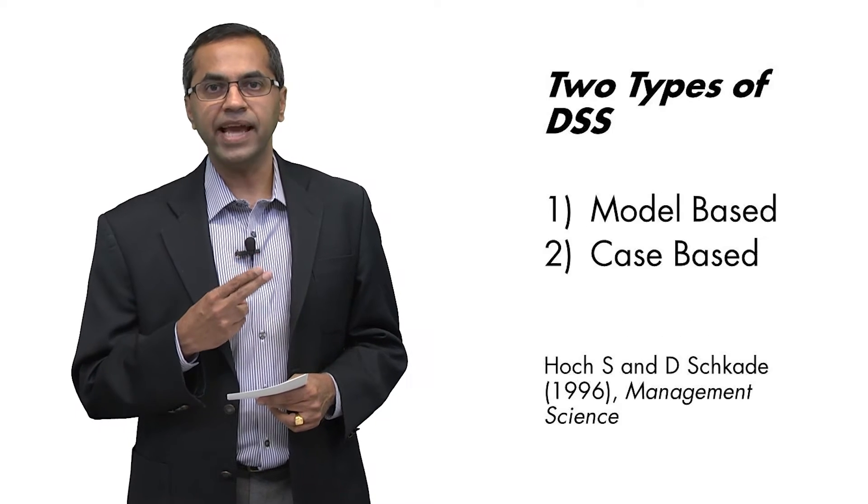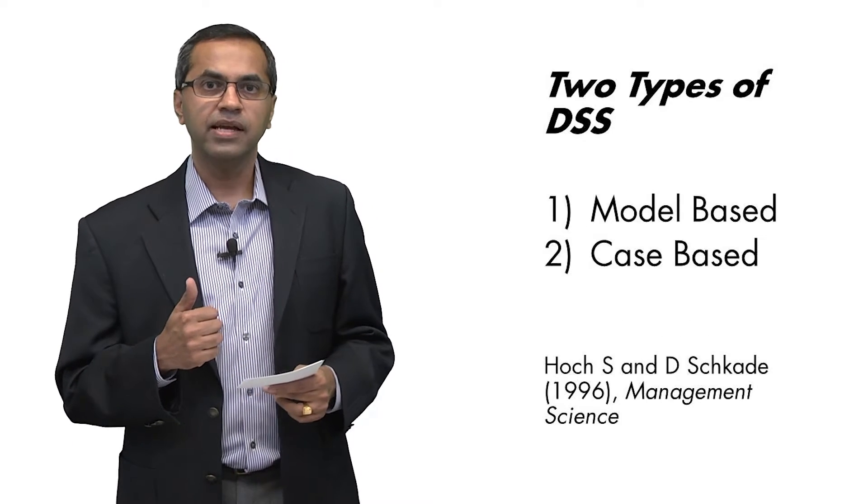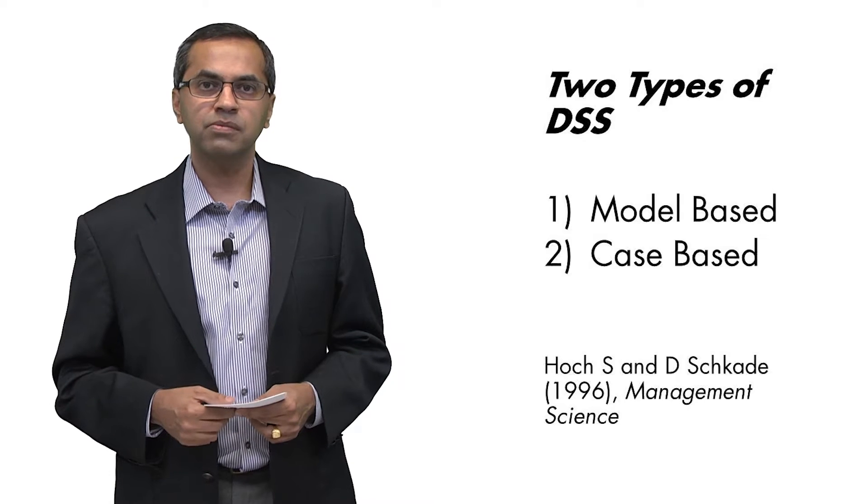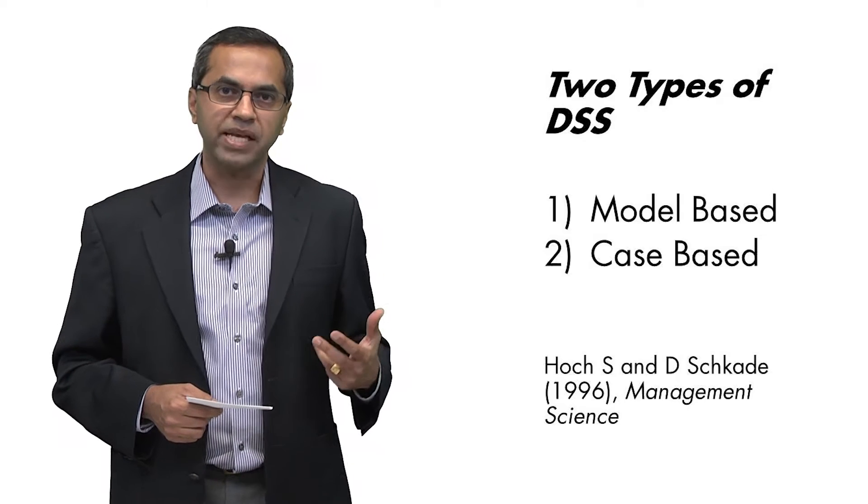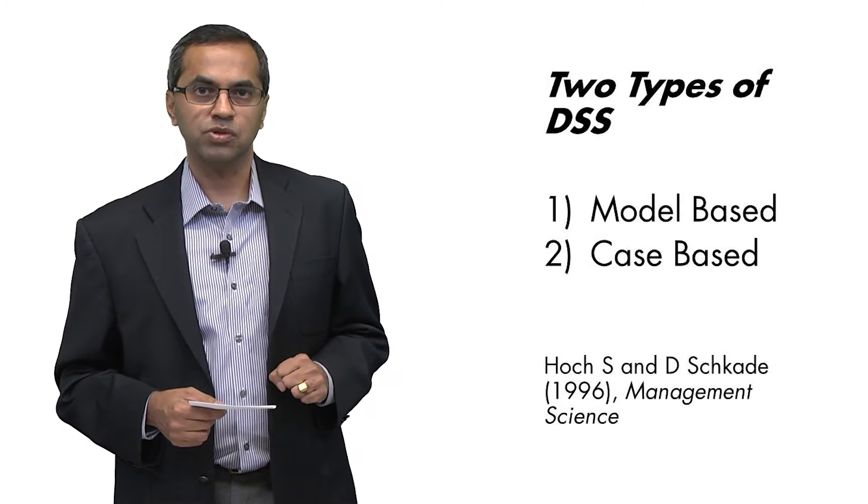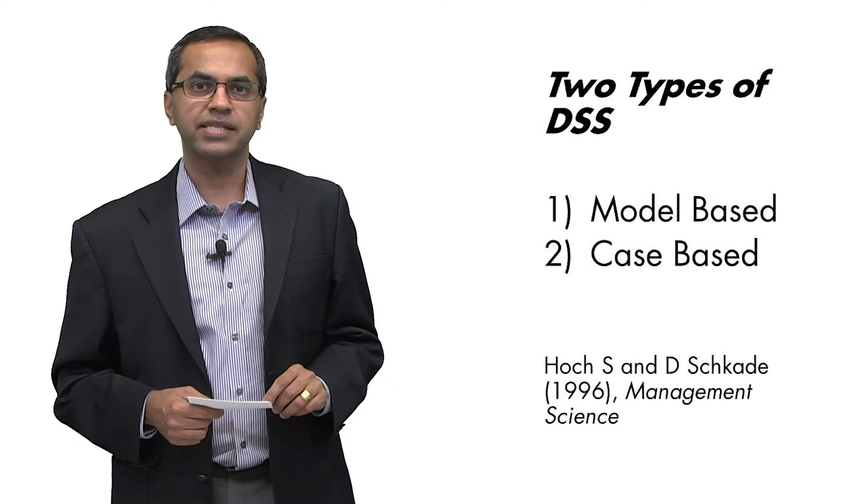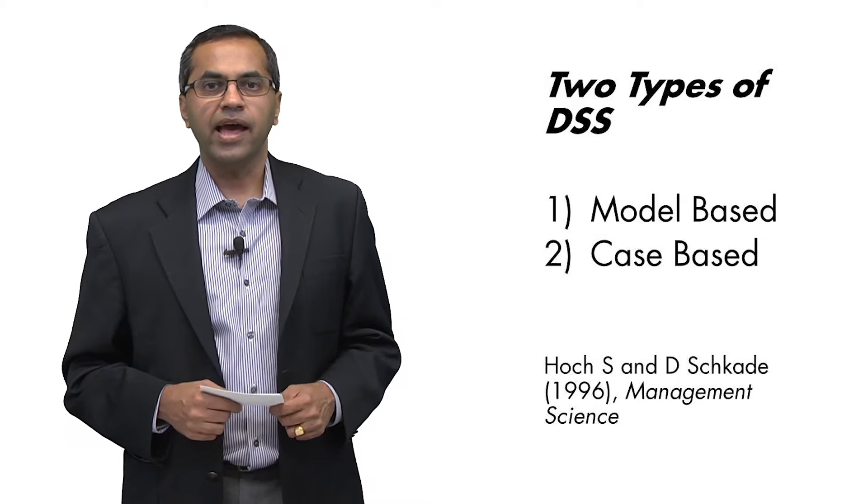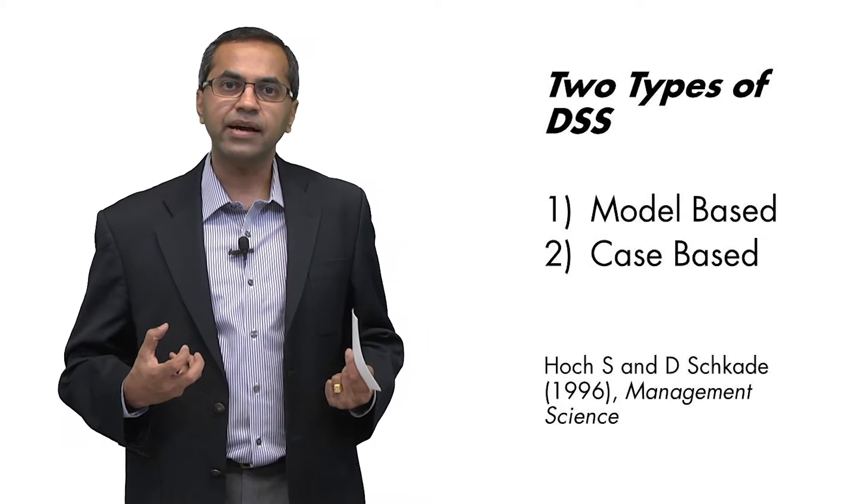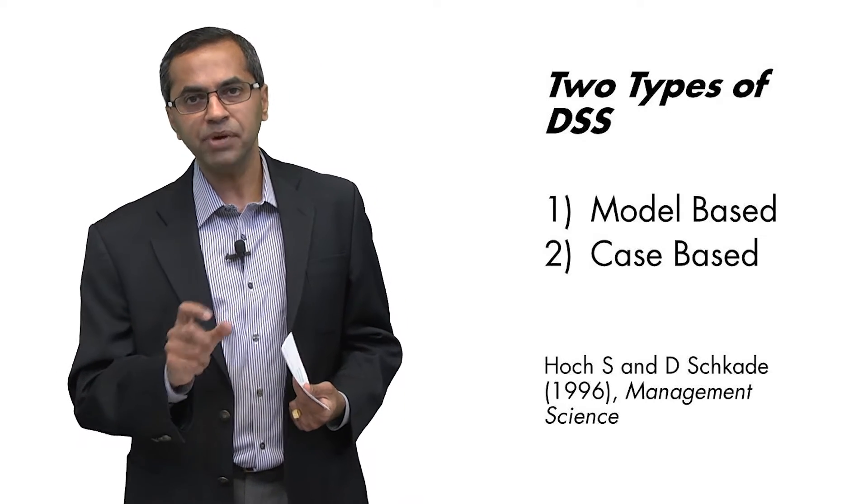We talked about two kinds of DSSs. The first one is a model-based decision support system. The second one is a case-based or data-based decision support system. In this segment, I'm going to draw on some research that was done by Steve Hoke and David Shkadi where they talked about these two different kinds of DSSs and actually compared the two.